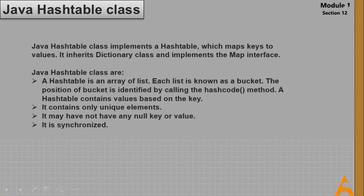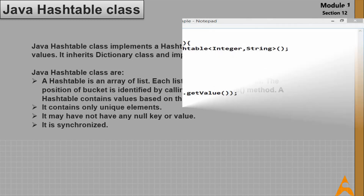Now let's see the Hashtable class in Java. Hashtable implements a hash table which maps keys to values. It inherits Dictionary class and implements Map interface. Key points: a Hashtable is an array of lists — each list is known as a bucket, and the bucket position is identified by calling the hashCode() method. It contains values based on key, only unique elements, cannot have any null key or value, and it is synchronized.